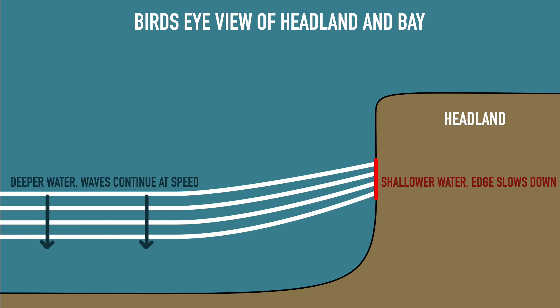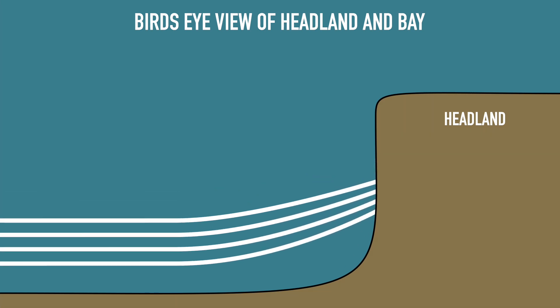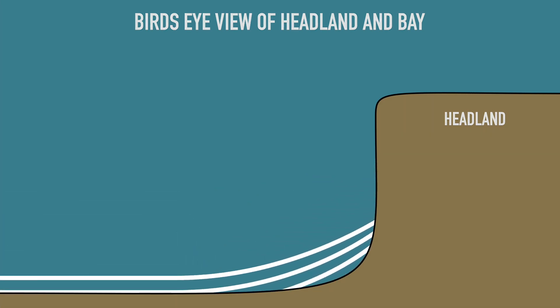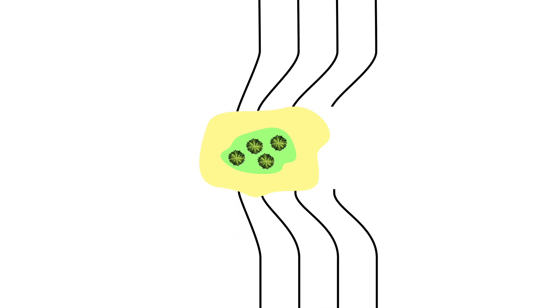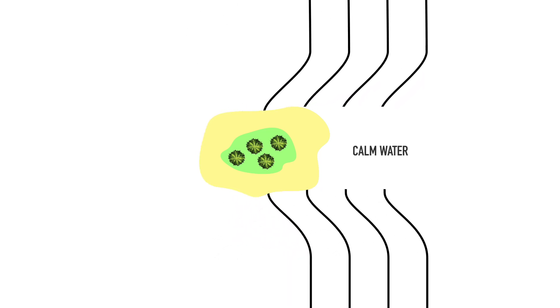Refraction can either concentrate the power of a wave onto a smaller area of coast or stretch the energy of the wave over a wider area. For example, where a wave reaches a shallower sandbar or reef, the parts in deeper water will continue at speed, while the part of the wave that hits the shallow water will slow over the lessening depth, pulling the edges of the wave inwards and concentrating a greater length of wave energy onto the sandbar or reef.